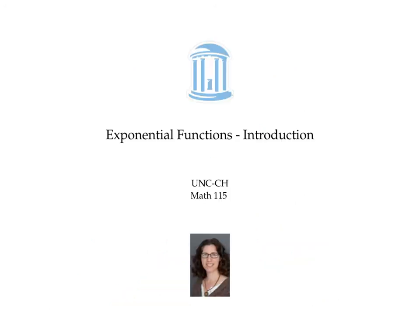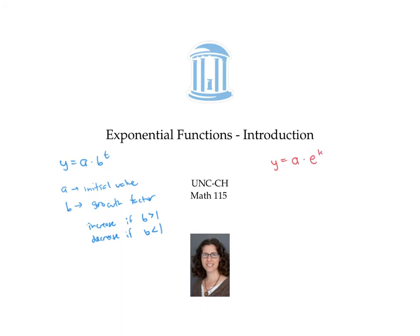This video introduced the equation for an exponential function, y equals a times b to the t, where a is the initial value and b is the growth factor — corresponding to growth or increase if b is greater than one, and decrease or exponential decay if b is less than one. We also saw an alternative form, y equals a times e to the k t, where a is still the initial value and e to the k corresponds to b, the growth factor.